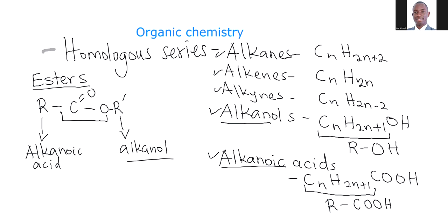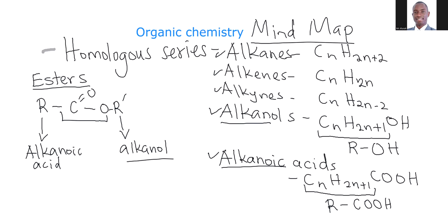Generally speaking, when you start off with organic chemistry, you must be aware of all these six homologous series. I will be dealing with the details going in one-on-one. How do you best revise this homologous series? These homologous series are best revised using a very important method we call the mind map. Mind maps are very, very important when you're dealing with the homologous series. You cannot go wrong with mind maps, because if you can make one, then even if they give you any question on organic, you're going to get it right.